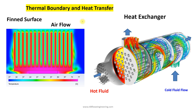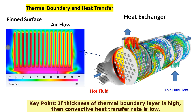Thermal boundary layer has a lot of applications in the design of heat exchangers. Here I have presented an example of a fin structure. When a cold flow flows over the heated block, there is a formation of thermal boundary layer. When air flows over this fin structure, it gains heat and the temperature of the air increases. You can see around this fin structure there is a formation of the thermal boundary layer.